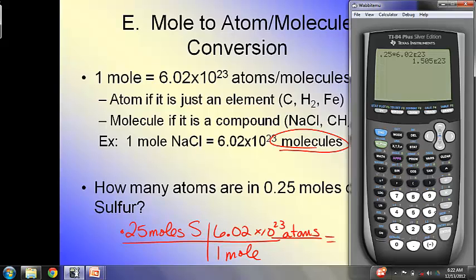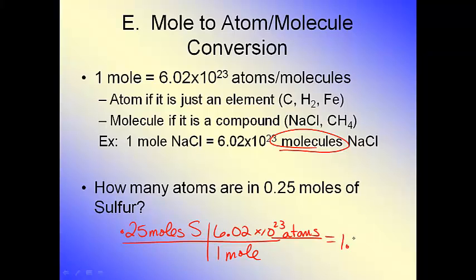And I get my number of 1.505 times 10 to the 23rd. I only need two sig figs here. So it's going to be 1.5 times 10 to the 23rd atoms of sulfur. Now, good rule of thumb. Something like that red warning light that needs to go off in the back of your head. Your molecules and atoms will be a very large number. So there had better be scientific notation on the end of your number.